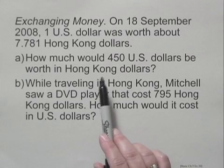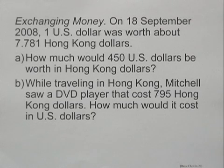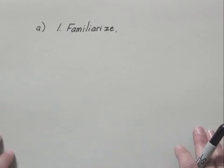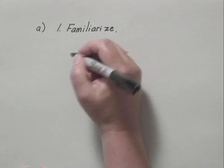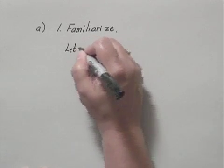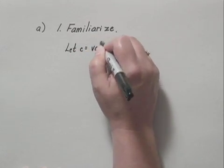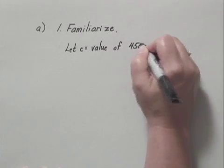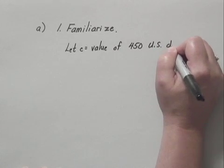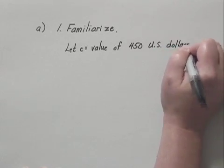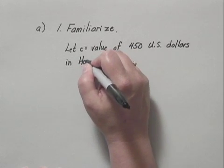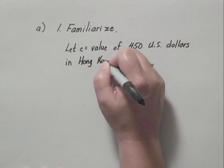We'll solve Part A and Part B each using the five-step problem-solving process. The first step in that process is to familiarize ourselves with the situation. We will let C represent the value of 450 U.S. dollars in Hong Kong dollars — that's the first question we were asked to solve.